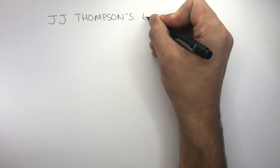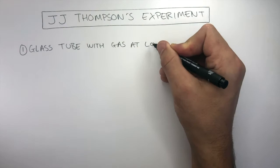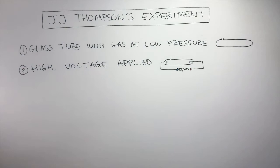Let's now summarize J.J. Thompson's experiment. First, he had a glass tube with gas at low pressure. Second, a high voltage was applied, which was 15,000 volts.